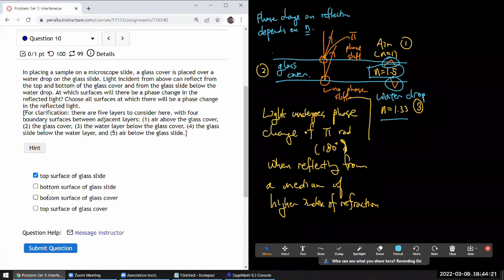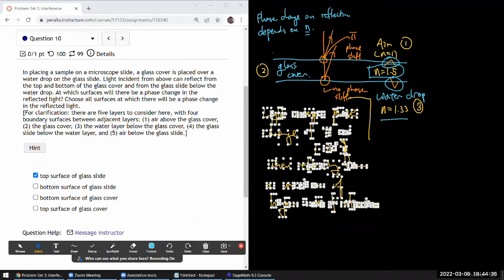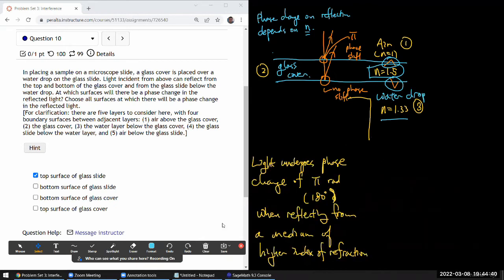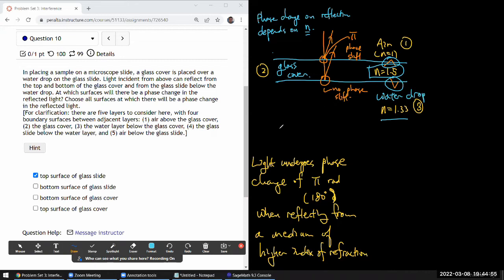So these relationships that we've noted, they will continue to hold. Which means, it's asking choose all surfaces in which there will be a phase change in the reflected light. Okay. So there will be a phase change in the top surface of the glass slide. And. Oh, wait, wait, wait. Did I? Oh, sorry. I kind of missed a little bit of detail. Well, there's one more layer. So let me move this out of the way so that I can draw that additional layer. That additional layer is below water because the water is sitting on top of a glass slide. So we have glass cover here and we have glass slide down here. I think that's right. Yeah. Where n is equal to 1.5 again. And I think there's one more layer. Below the glass slide, there's air with n equals 1. Okay.